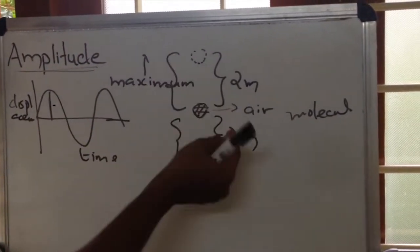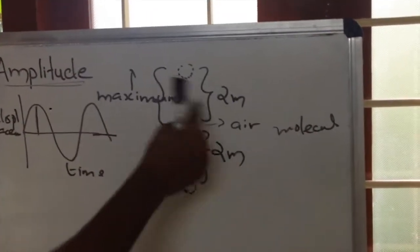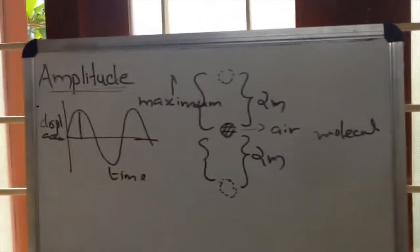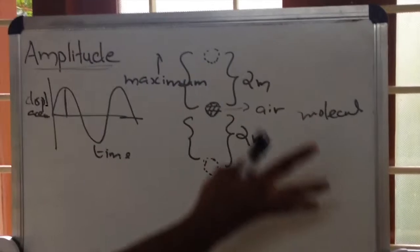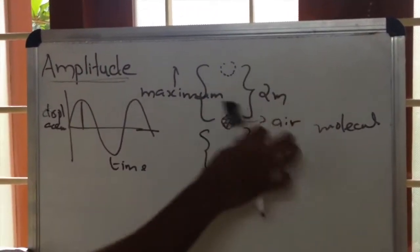So this maximum displacement of this air molecule from the mean position is called the amplitude. So here the amplitude is 2 meters.